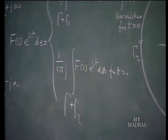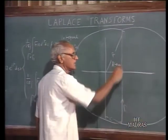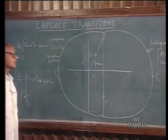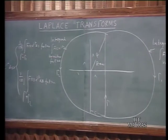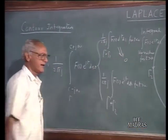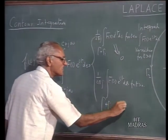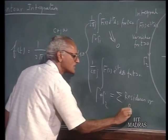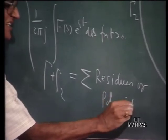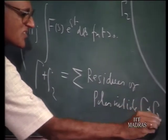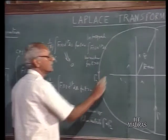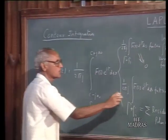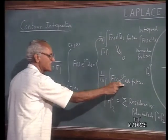As far as this contour integration is concerned, there are no poles inside the gamma 1 contour because all the poles lie to the left. Therefore, since this closed contour does not include any poles, this turns out to be 0. For the other contour, it will be equal to the sum of the residues of the poles inside that closed contour. So, whatever poles you have, you take the residues of those poles, and that will equal your f(t) for t greater than 0.